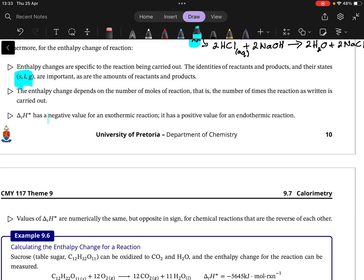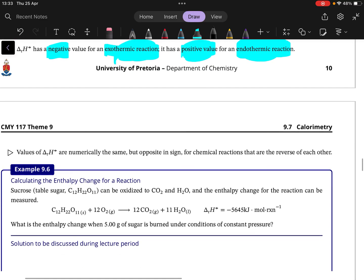When enthalpy is negative, it's an exothermic reaction. If positive, it's endothermic. This keeps with the same idea of heat and enthalpy we looked at earlier.